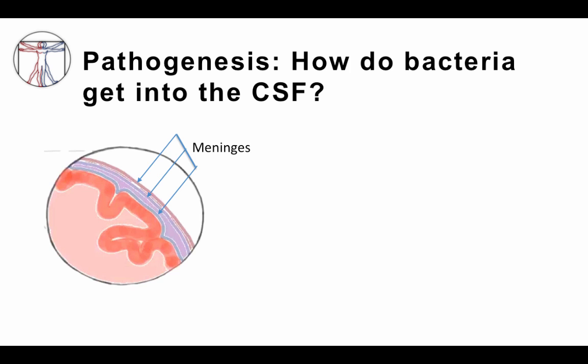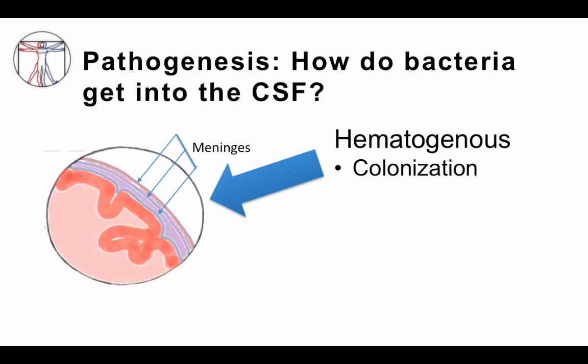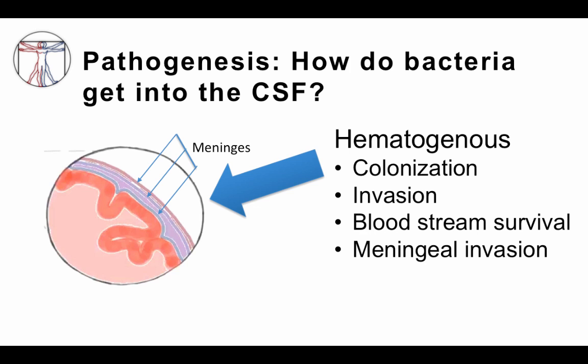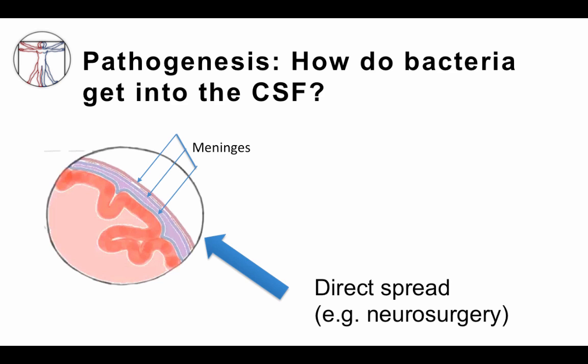So how do bacteria get into the cerebrospinal fluid and cause meningitis? Most commonly, it's hematogenous spread — meaning via the bloodstream. Usually, there is colonization of the respiratory epithelium by organisms such as Neisseria meningitidis, Streptococcus pneumoniae, or Haemophilus influenzae. The bacteria colonize the respiratory epithelium, invade through it, get into the bloodstream, and then make their way into the meninges. However, in some cases — such as following neurosurgery at a large medical center — there can be direct communication between the outside and the brain, allowing direct spread of bacteria causing meningitis, though this is less common.